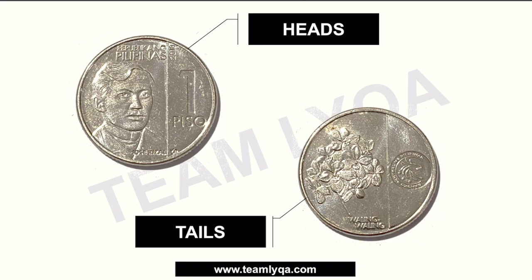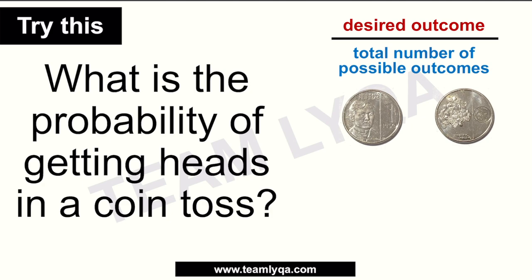Let's start with something simple — flipping a coin. Pagdating kasi sa coin, meron tayong heads at saka tails. If the question is: what is the probability of getting heads in a coin toss? At ang tinaggamit natin ay theoretical probability, gusto nating hanapin yung ating desired outcome. Sa isang coin, meron kang isang side na head — ito yung gusto nating mangyari — so that would be one over the total number of possible outcomes. Dahil dalawa ang side ng coin, bawat time na mag-flip ka, merong dalawang possible outcomes: either head o tail.